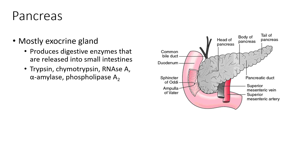Some of the digestive enzymes secreted by the pancreas in an exocrine way are trypsin and chymotrypsin, which help break down proteins; RNase A, which helps break down RNA; alpha amylase, which helps break down starches and carbohydrates; and phospholipase A2, which helps break down fats. These are all different components we might encounter in our diet, and the pancreas helps secrete these enzymes to break down foods for energy or energy storage.